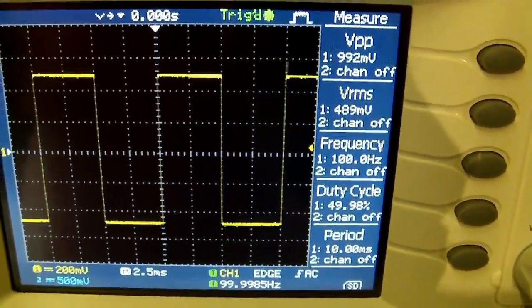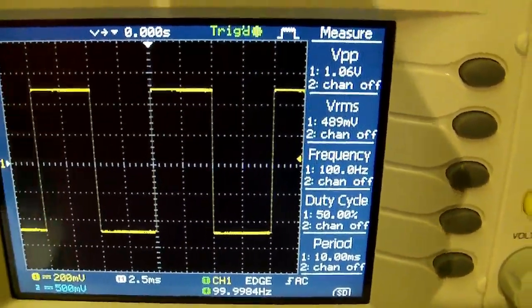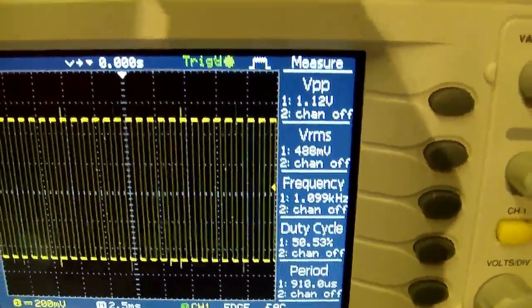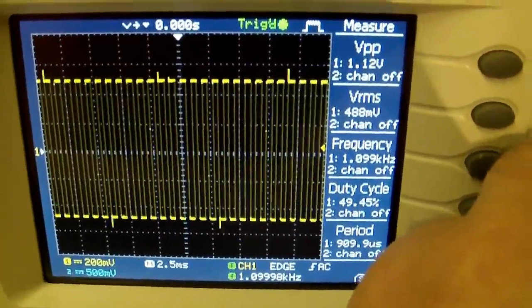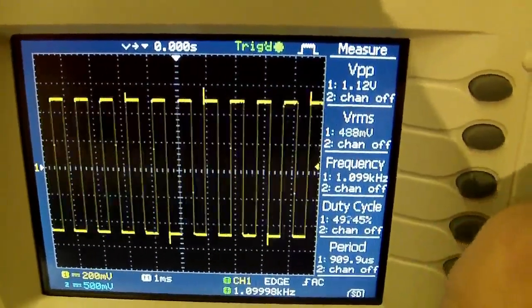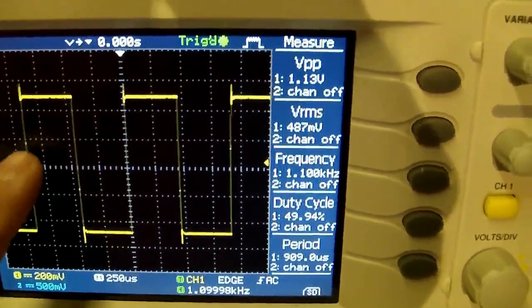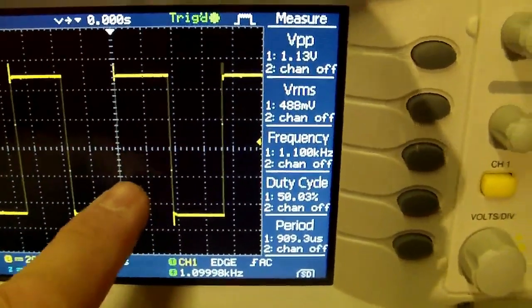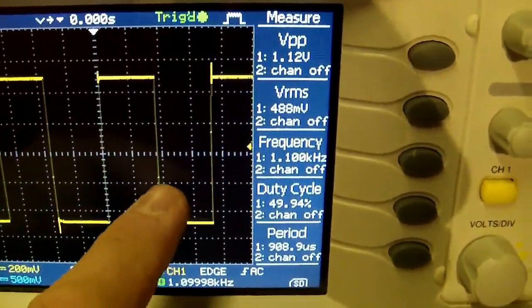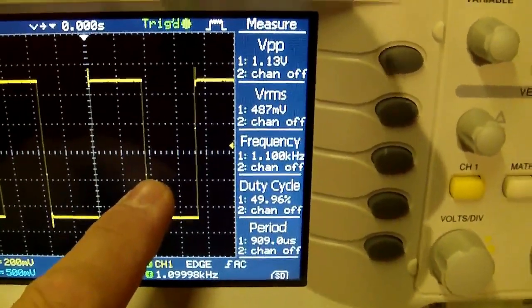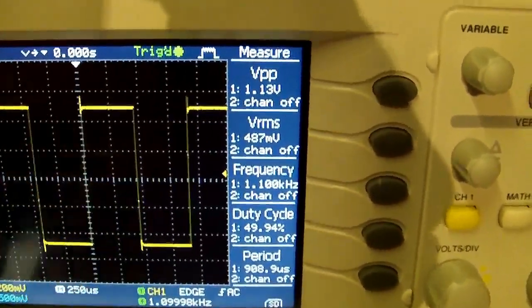So what happens if we speed up the frequency? Now we go to 1 kHz and you see small glitches. Here, there, here it's impossible to see but there you see also one glitch. We're going to speed it up a little more.